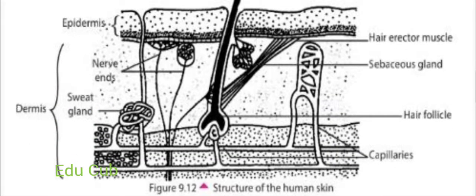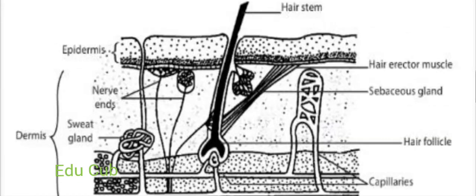This diagram shows you the structure of human skin. Observe it carefully. At the top of the figure there is a hair stem. Here are erector muscles, follicle capillaries, nerve endings, sweat glands, epidermis, and sebaceous glands.